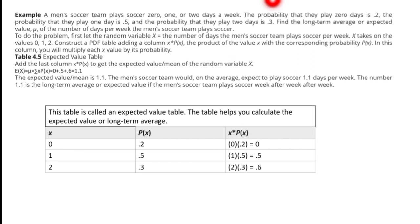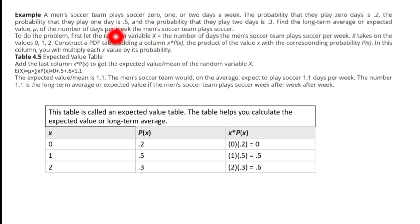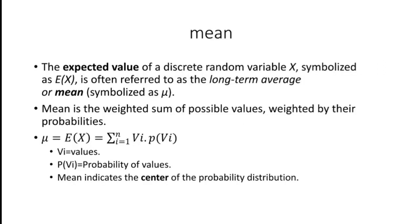The men's soccer team plays soccer zero, one, or two days a week. So x takes values 0, 1, or 2. I'm constructing an expected value table to find out the mean. The probability that they play zero days is 0.2, the probability that they play one day is 0.5, and the probability that they play two days is 0.3.